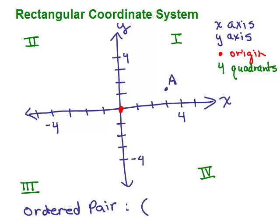And an ordered pair looks like this. It's got a parenthesis, some number which I'll just call x for now, and some other number which I'll just call y for now, and another parenthesis, and there's a comma between them. The first number represents what we call the x coordinate, and the second number represents the y coordinate.